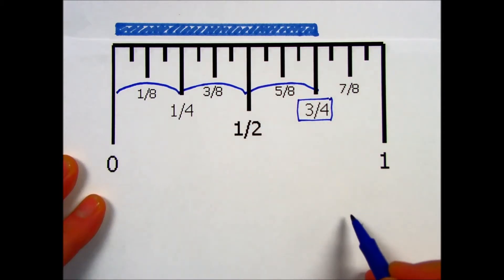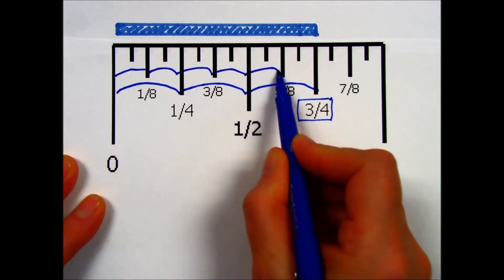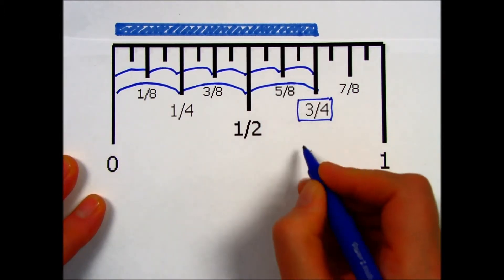If instead I'd like to measure it using units of 1/8th of an inch, I have 1, 2, 3, 4, 5, 6/8ths.